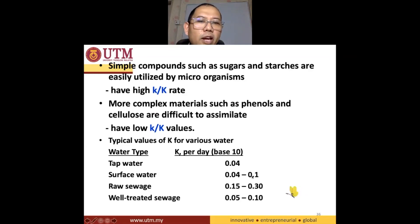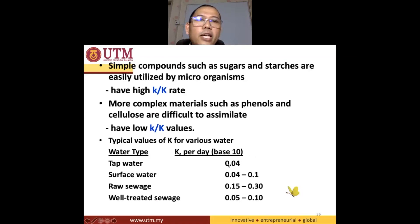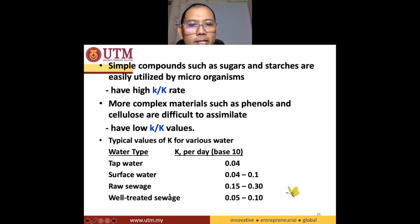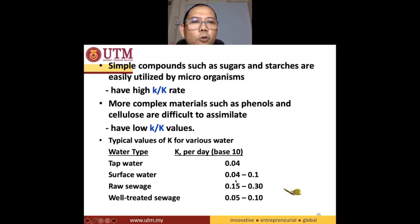This is how the values look like. If you have tap water — let's say it has some organic content, probably very small — the K value will be 0.04. For surface water like a river, the K value is probably around 0.04 to 0.1. For raw sewage, water from toilets for instance, the K is high: 0.15 to 0.3. For well-treated sewage, it contains less organic, so the value is also small.